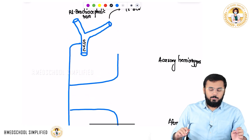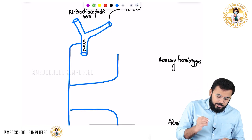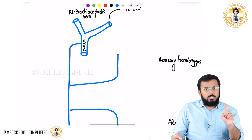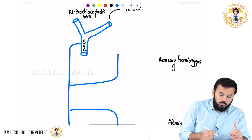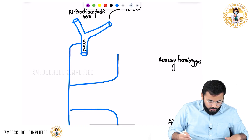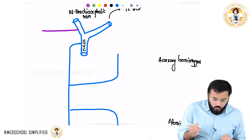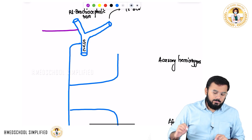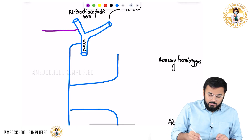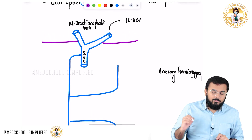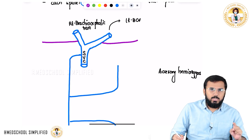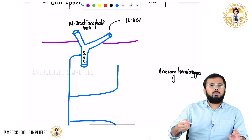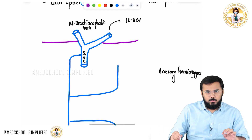Looking at the right and left brachiocephalic veins: the first posterior intercostal vein on the right side directly drains into the right brachiocephalic vein. Similarly, the first posterior intercostal vein on the left side directly drains into the left brachiocephalic vein.